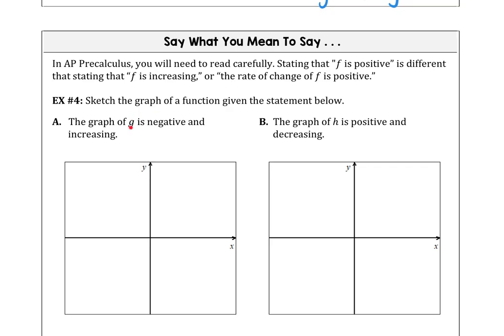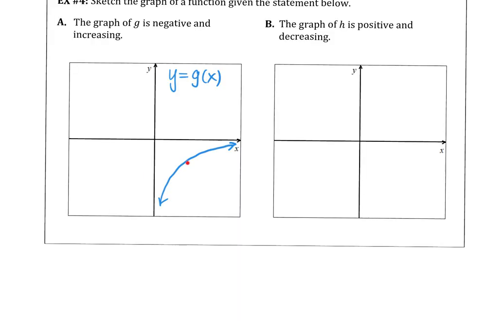And what we saw at the beginning, when a graph is negative, that means it is below the x-axis. And increasing means that it is going up as we move from left to right. So sketch a graph and then compare your graph to my graph. In my example, you can see that I'm below the x-axis. So the graph of g is negative. All the y values are negative. And the graph is increasing along that interval.